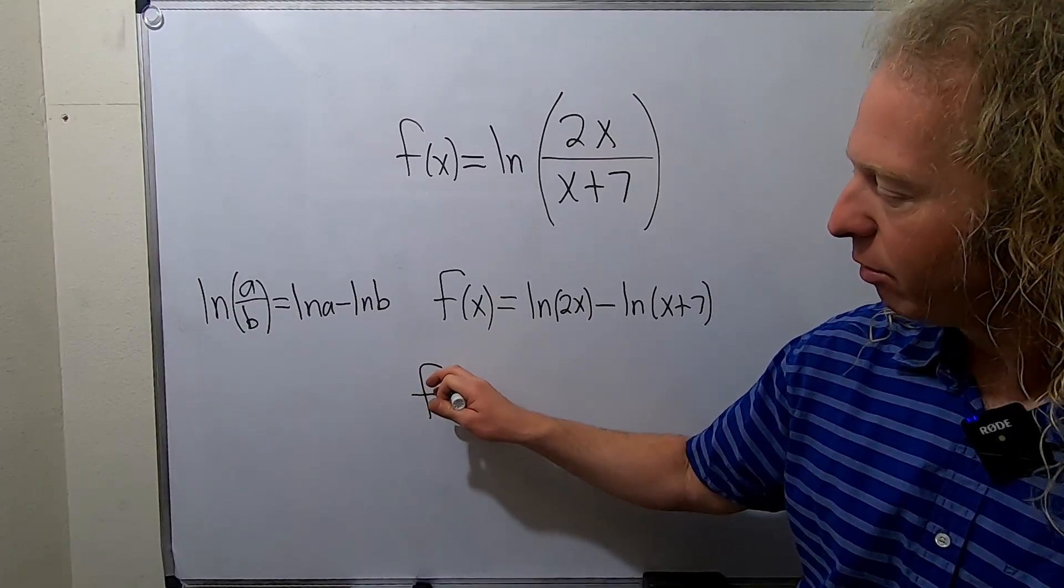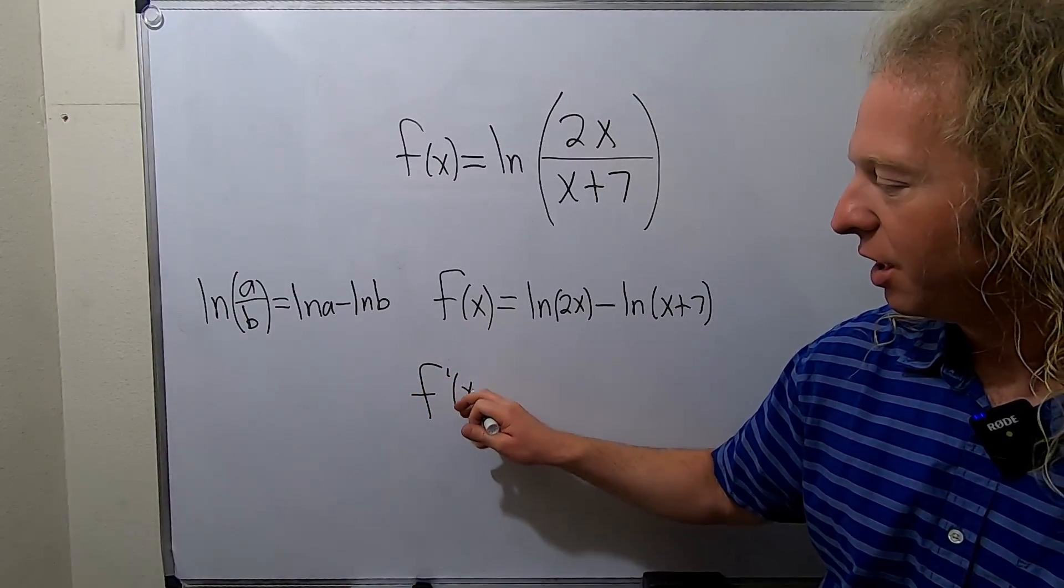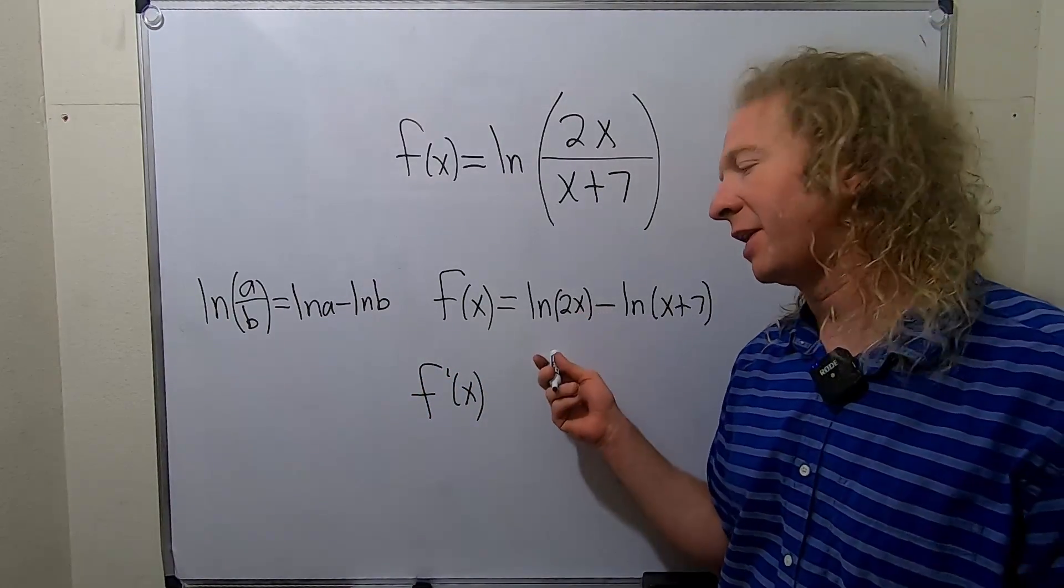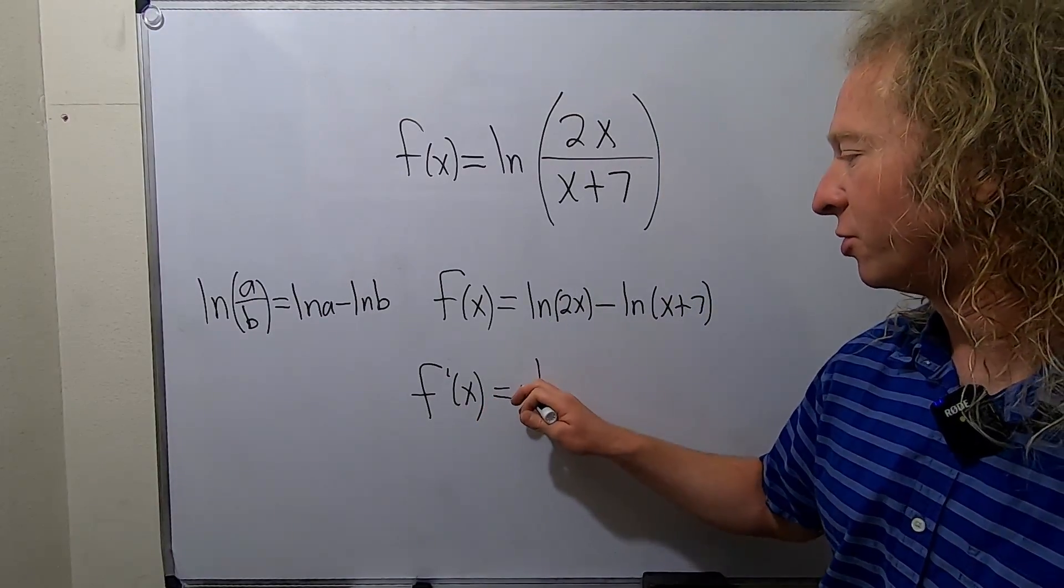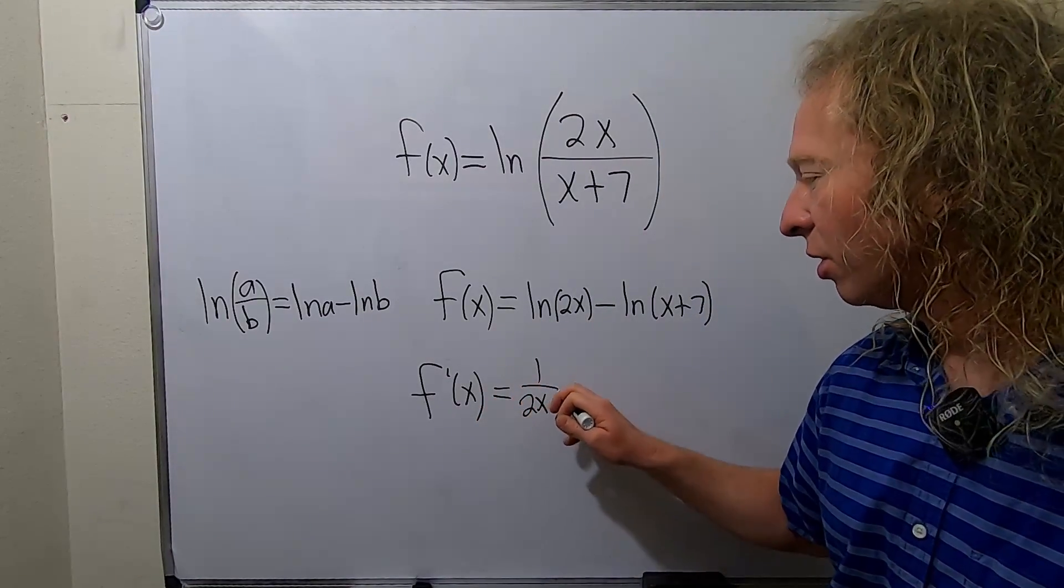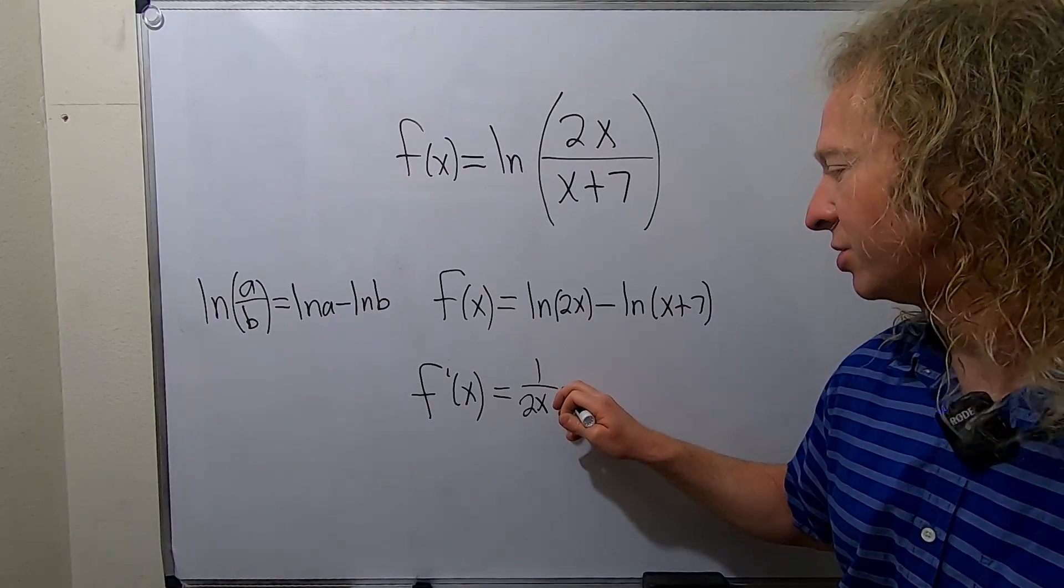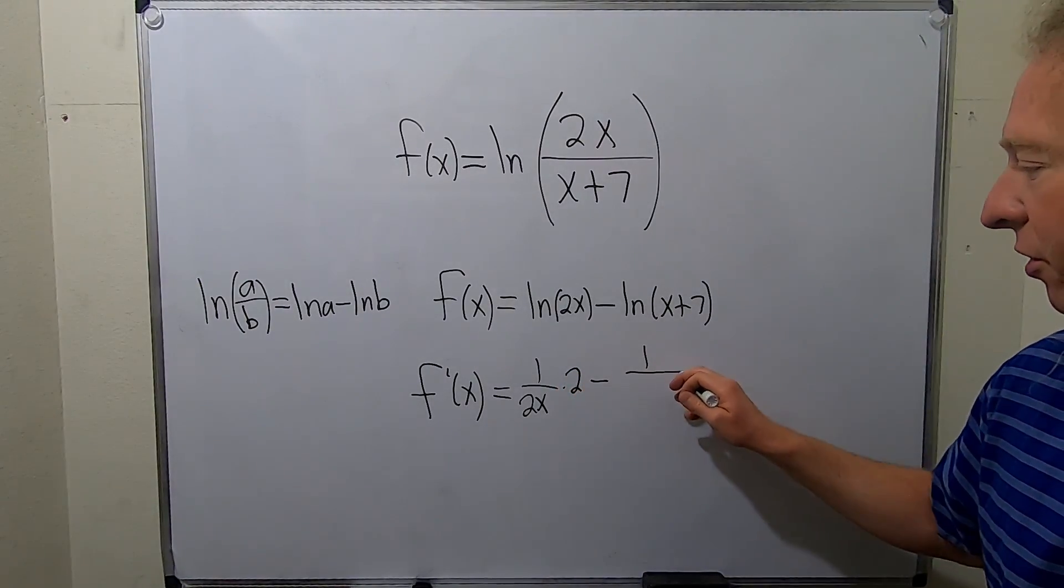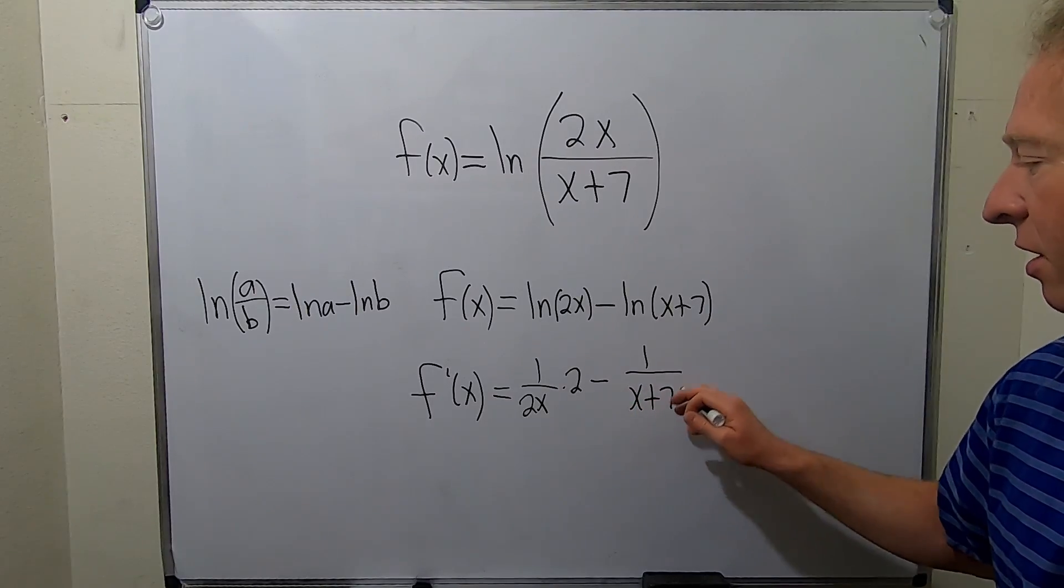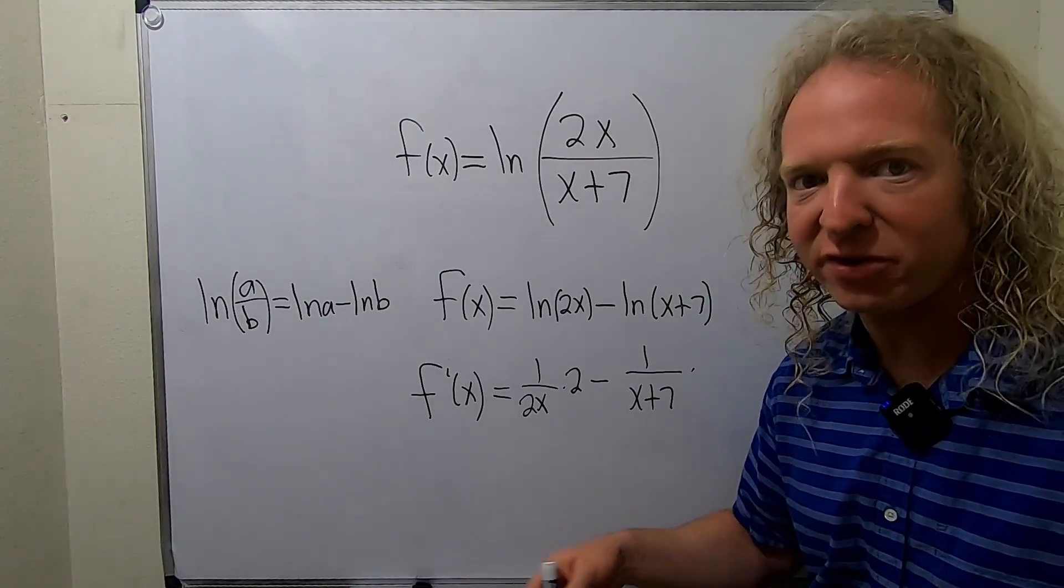So f prime of x. The derivative of ln x is 1 over x. But here it's ln 2x, so it's 1 over 2x. Chain rule times the derivative of 2x, which is just 2. And then same thing here, minus 1 over x plus 7 times the derivative of x plus 7, which is just 1.